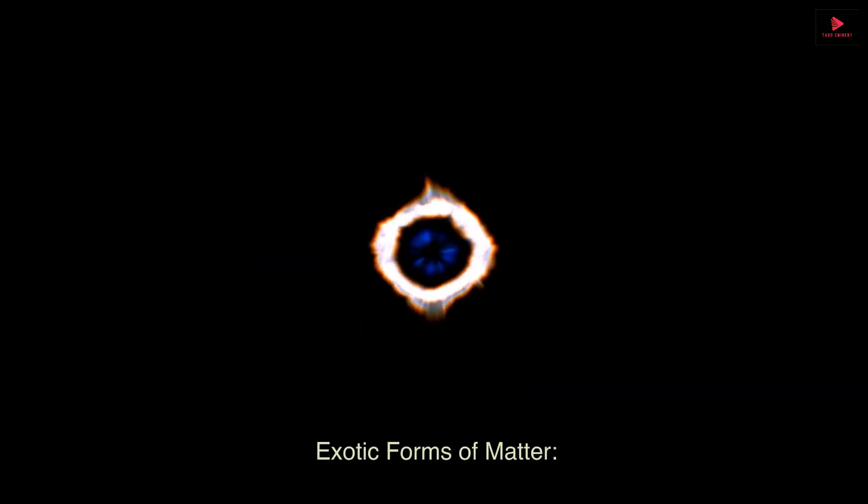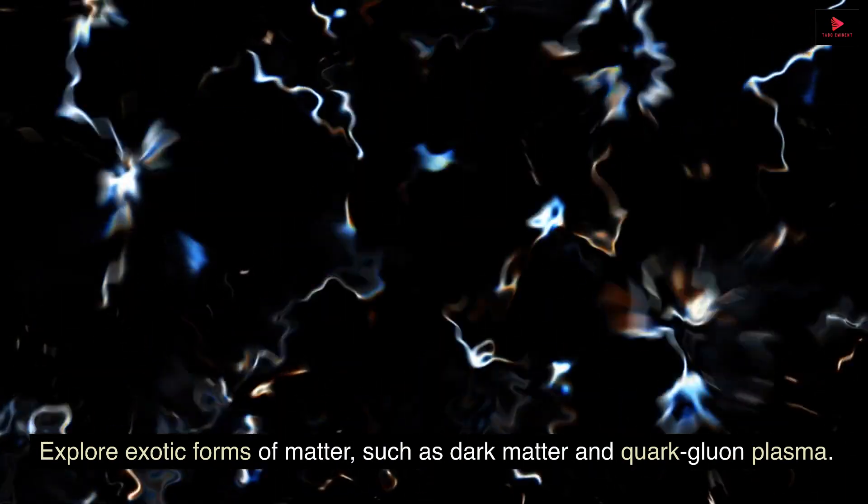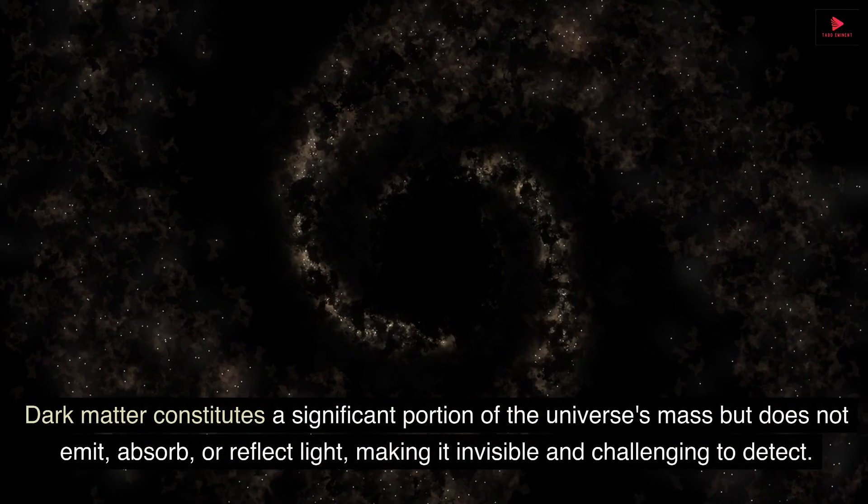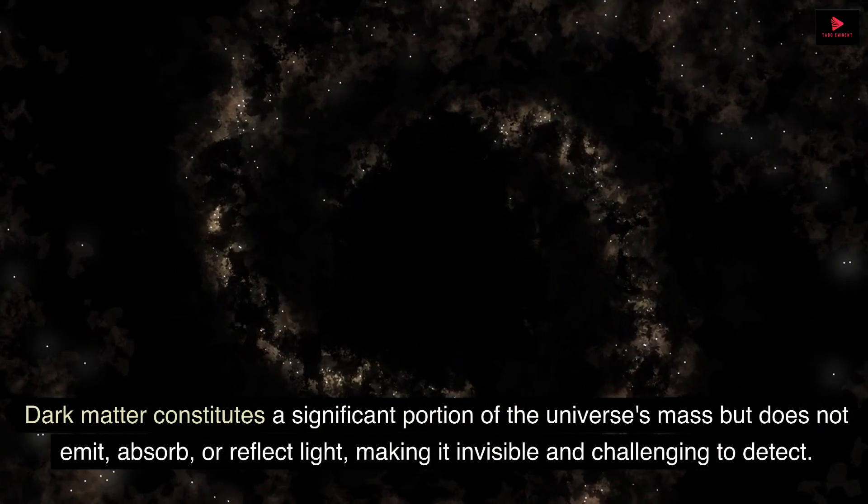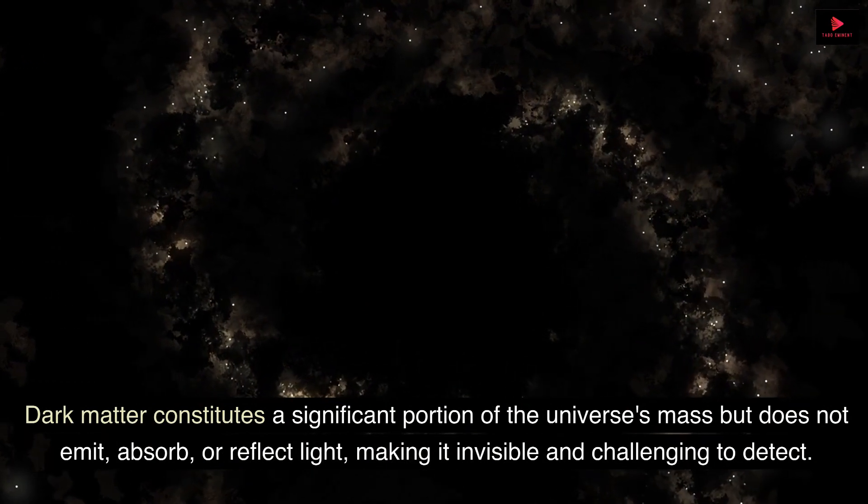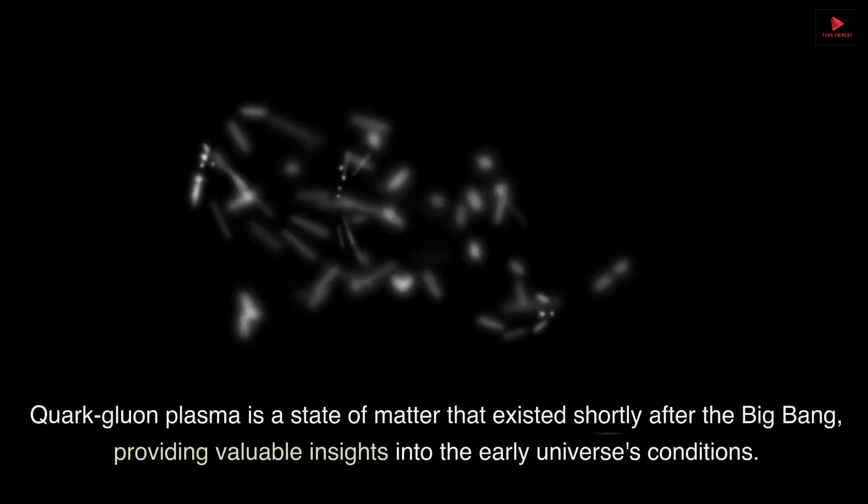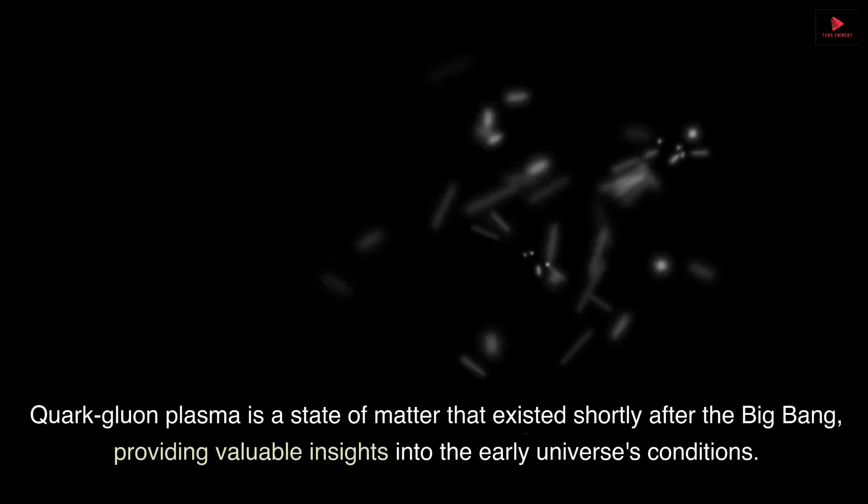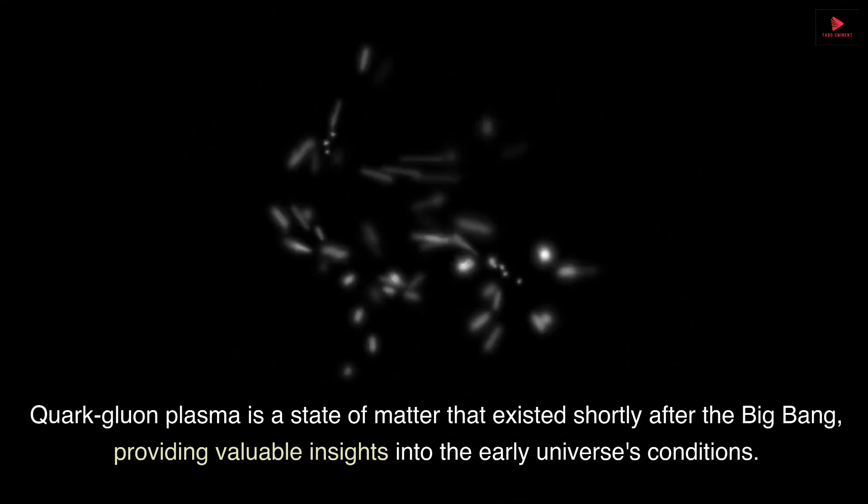Exotic Forms of Matter. Explore exotic forms of matter, such as dark matter and quark-gluon plasma. Dark matter constitutes a significant portion of the universe's mass but does not emit, absorb, or reflect light, making it invisible and challenging to detect. Quark-gluon plasma is a state of matter that existed shortly after the Big Bang, providing valuable insights into the early universe's conditions.